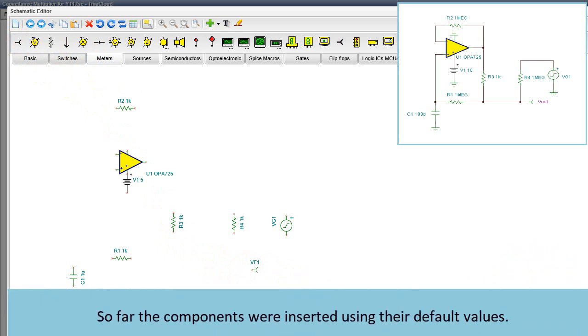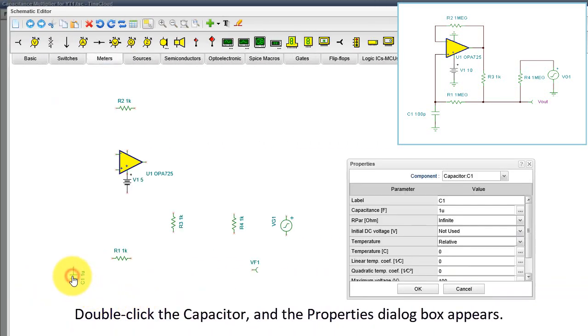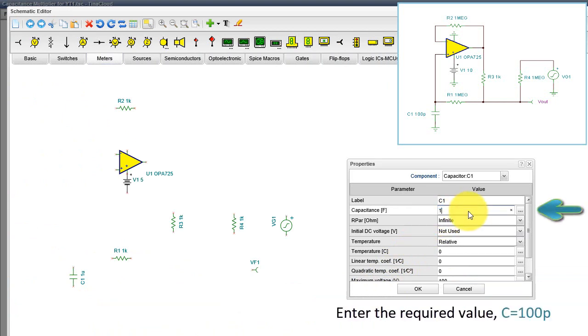So far the components were inserted using their default values. Double-click the capacitor and the Properties dialog box appears. Enter the required value 100p, that is 100 picofarads, and press OK.